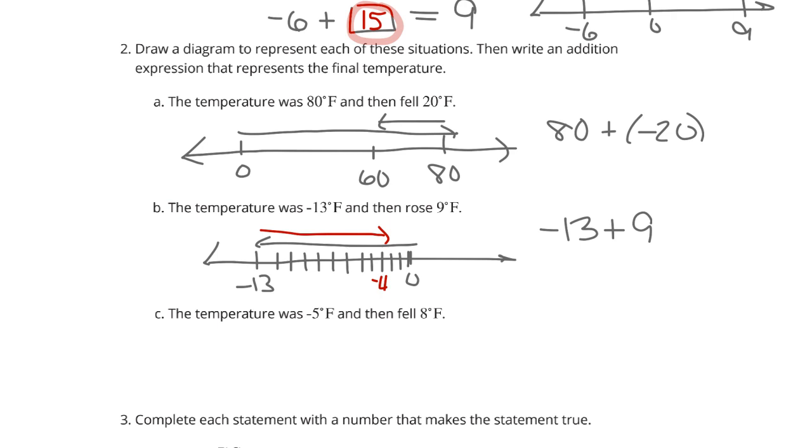Lastly, the temperature was -5 degrees, then fell 8 degrees. Wow. We're at 0. We're going down to -5. And then we're falling 8 degrees. 1, 2, 3, 4, 5, 6, 7, 8.